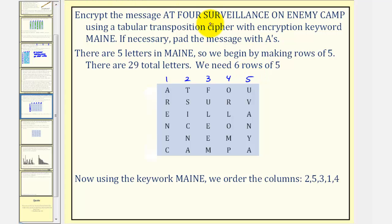Now we'll write the message out in rows. So we have, at four, surveillance, on enemy camp, and we have one extra character here we filled with A. That way each row has exactly five characters.